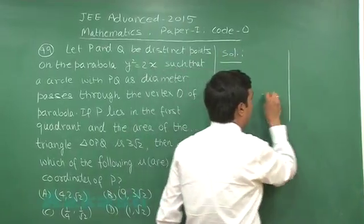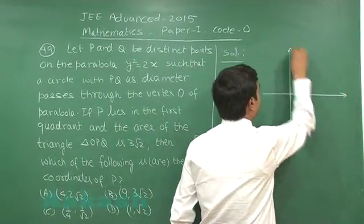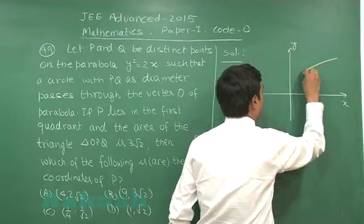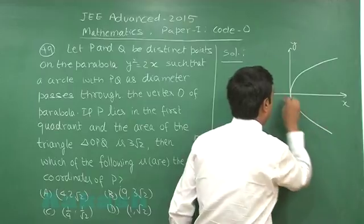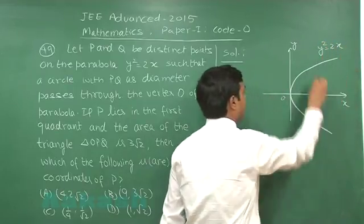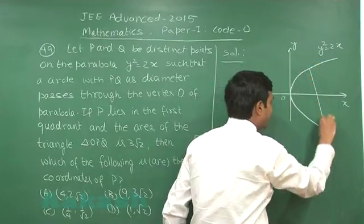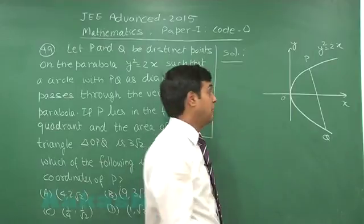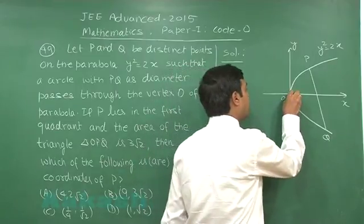A parabola y square equals 2x, two points are taken P and Q and this is the diameter for a circle which is passing through the vertex O.